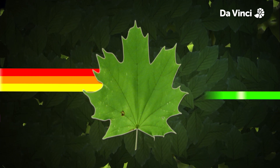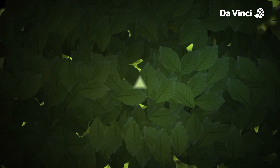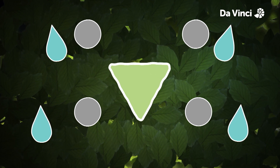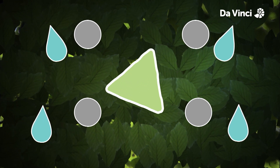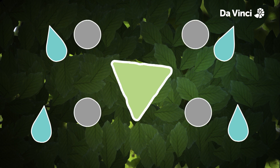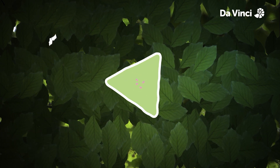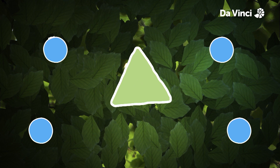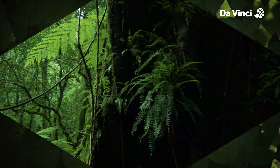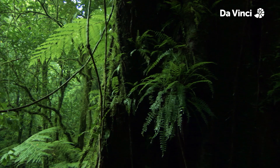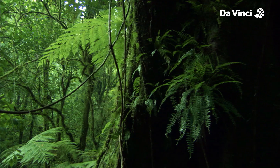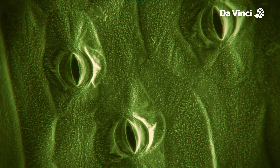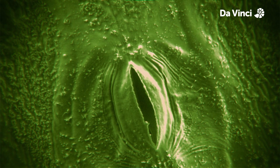The energy the chlorophyll does absorb is used to perform photosynthesis, which turns carbon dioxide from the air and water from the earth into sugars and oxygen. Plants can convert the sugars into other chemicals needed for growth or store it as starch. Oxygen is a waste product in the reaction and released into the air.